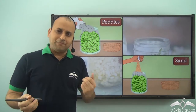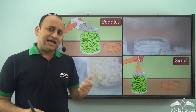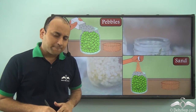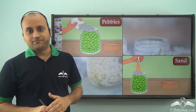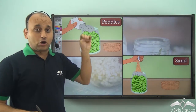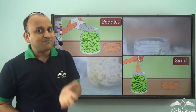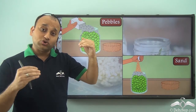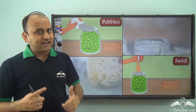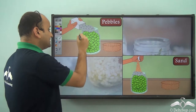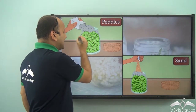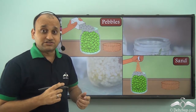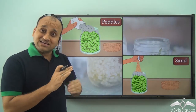Next, he got some pebbles and asked the students: if he adds these pebbles into the jar, will they go inside? The students said it's not possible because the jar is already filled with balls. But to their amazement, when the professor poured the pebbles into the jar, the pebbles slowly went inside. Why? Because these balls have gaps between them, and the pebbles are smaller than those gaps, so they settle in those spaces.